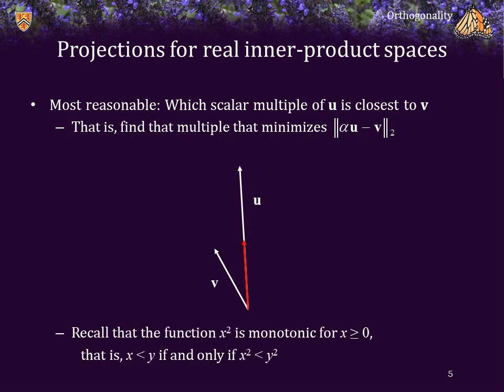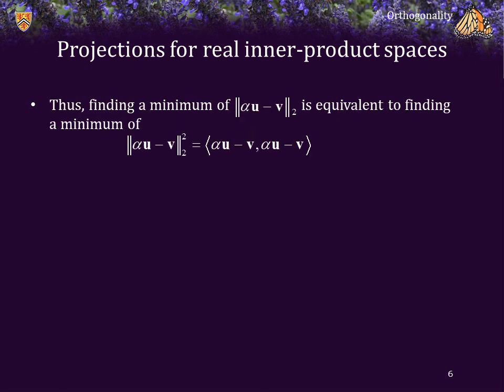Recall that the function x squared is monotonic for x ≥ 0, meaning x < y if and only if x² < y². This means we can minimize either the 2-norm or the 2-norm squared, and the minimum of one equals the minimum of the other. Finding the minimum of the 2-norm of the difference is equivalent to finding the minimum of the 2-norm squared of that difference, which is just the inner product of the difference with itself.